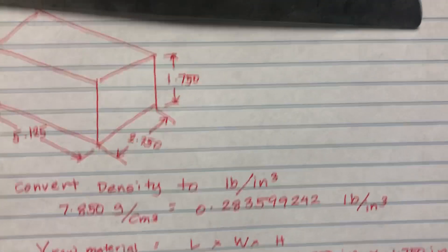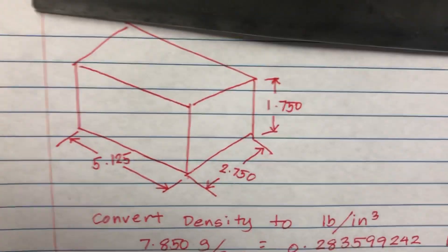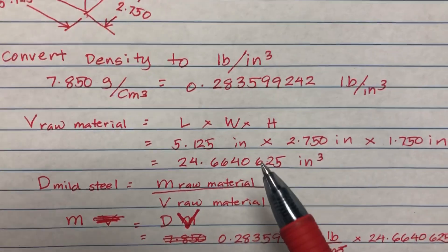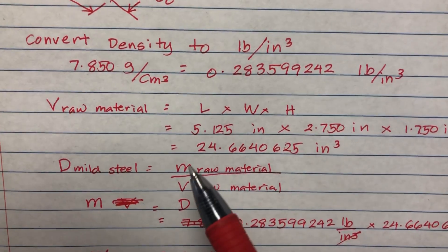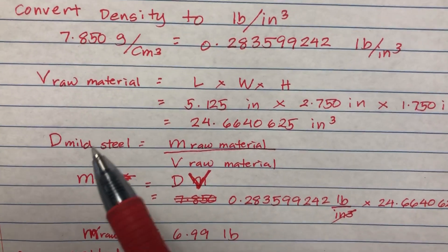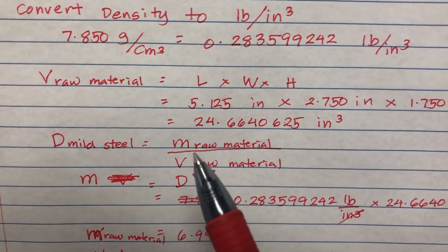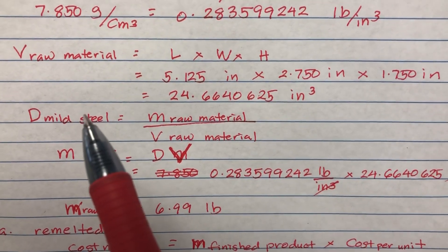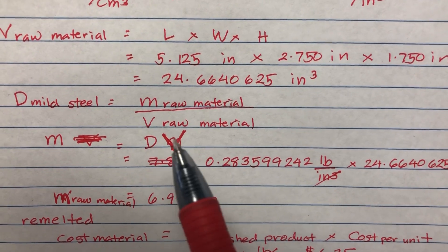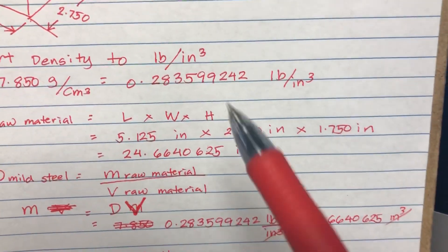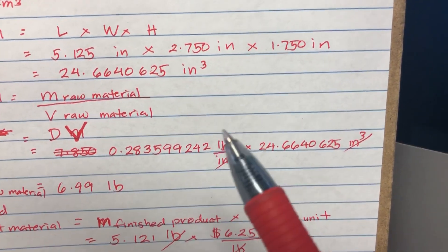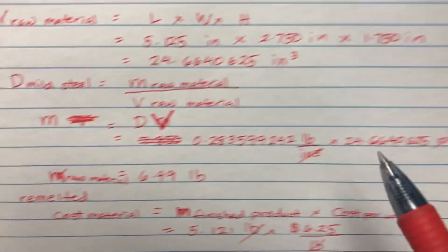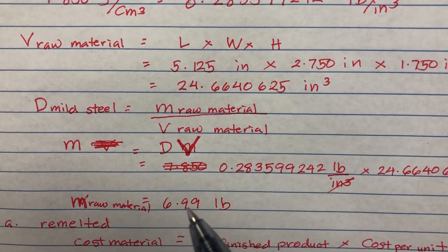Now I need to compute the volume of the raw material. Given the length, width, and height, I plug in all those numbers and get the volume. To find the mass of the raw material, I use the formula: density equals mass over volume, transposed to mass equals density times volume. With density 0.2835 and the calculated volume, the mass of the raw material comes out to 6.99 pounds.